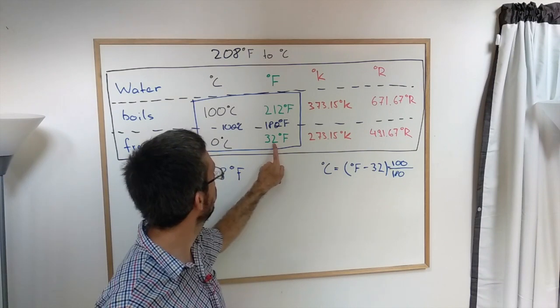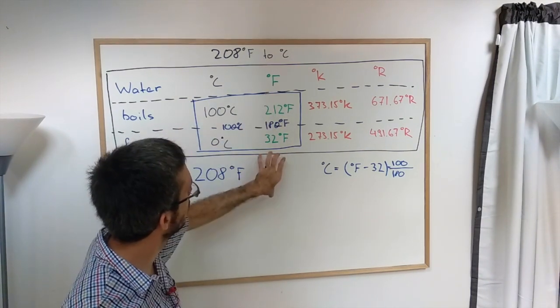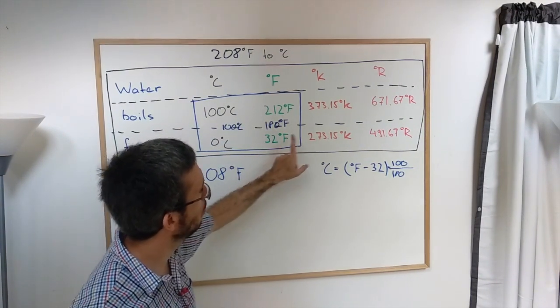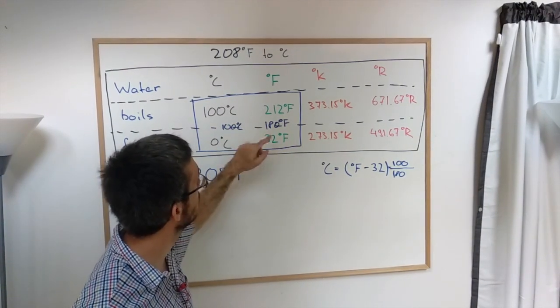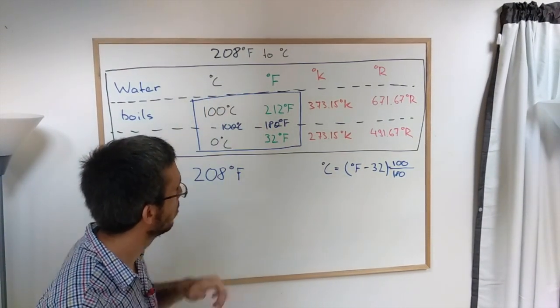So first we subtract 32 to move the scale down to zero. Then we divide it by 180 Fahrenheit and we multiply by 100 Celsius for the same range of temperatures.